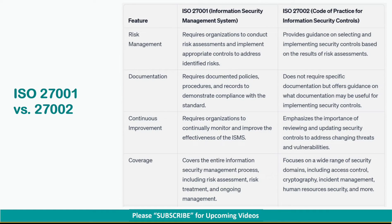ISO 27001 requires documented policies, procedures, and records to demonstrate compliance with the standard. ISO 27002 does not require specific documentation, but offers guidance on what documentation may be useful for implementing security controls.